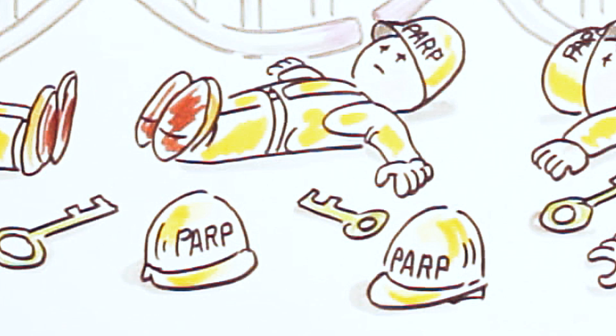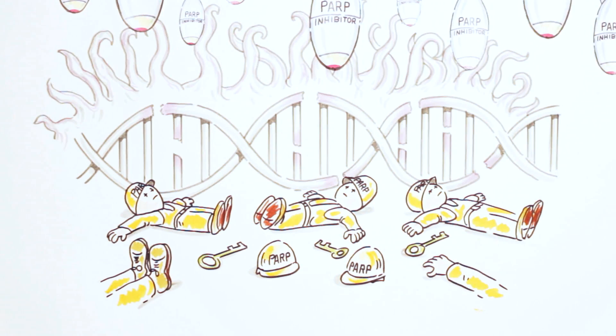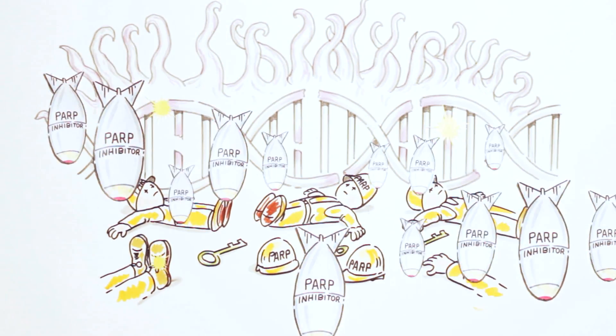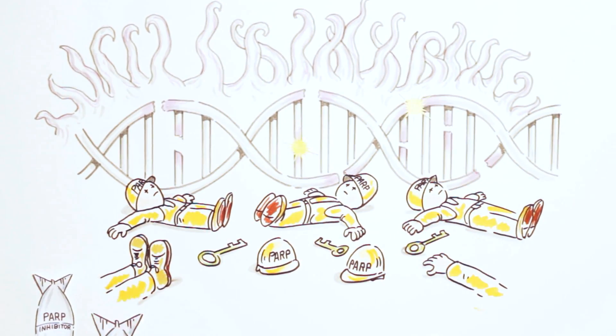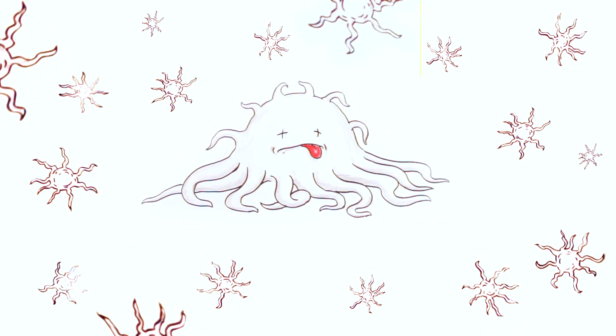The loss of the PARP repair crew allows more and more damage to occur to the cancer cells' DNA. Eventually, the DNA becomes so damaged it's useless, and the cancer cells die.